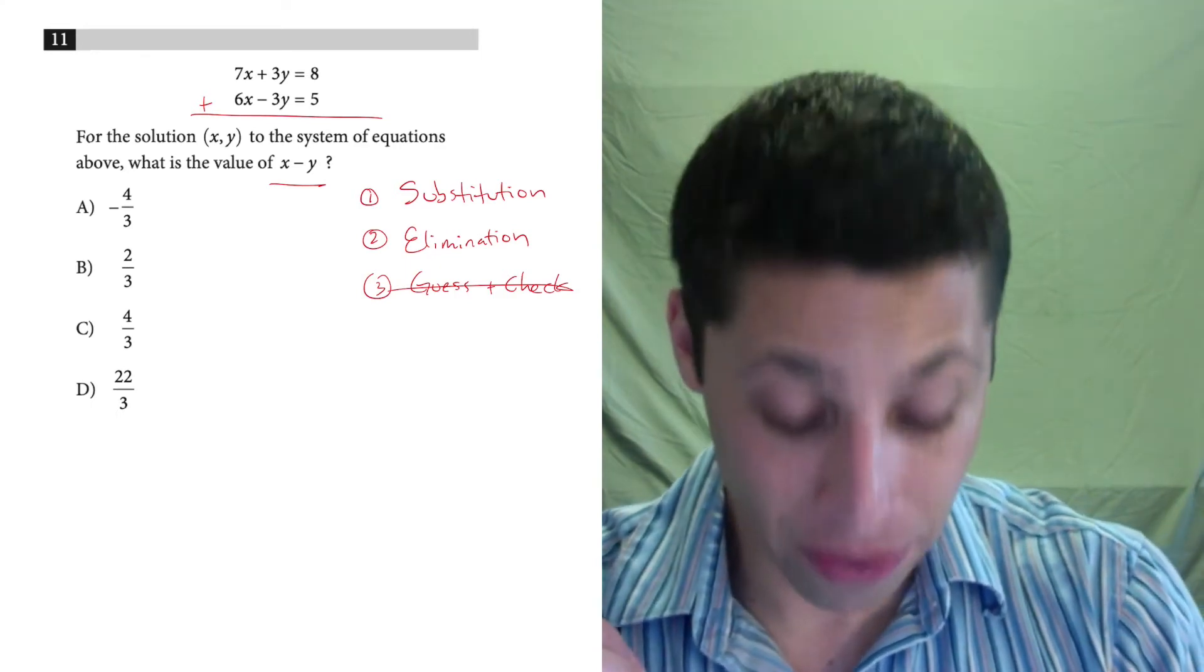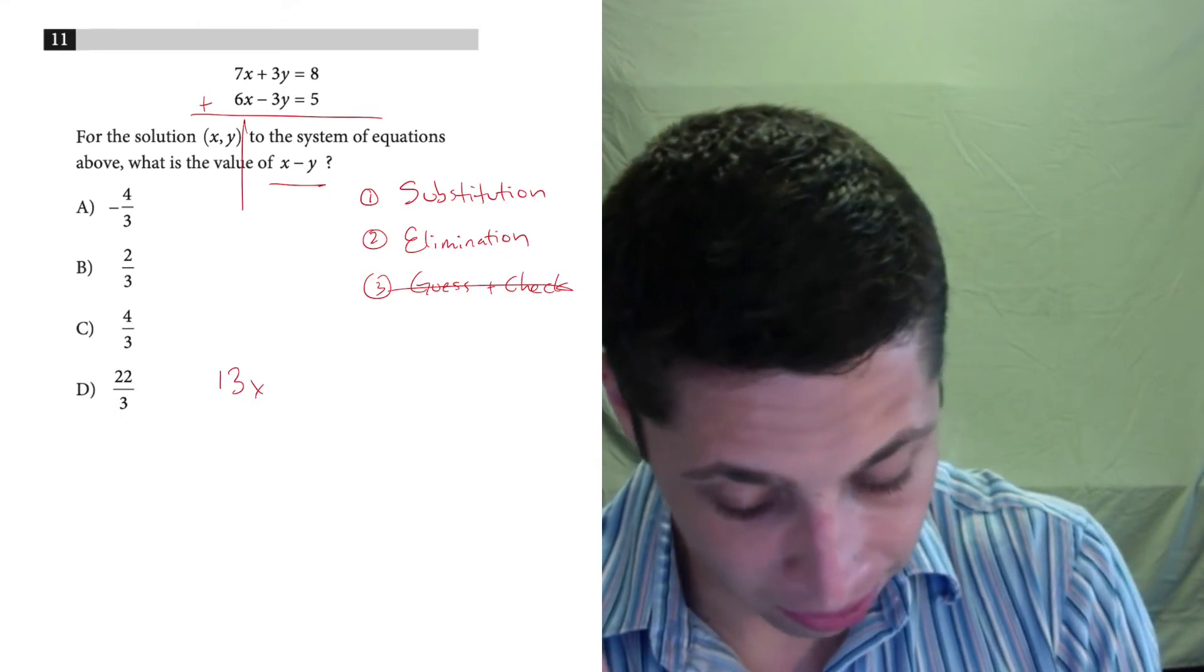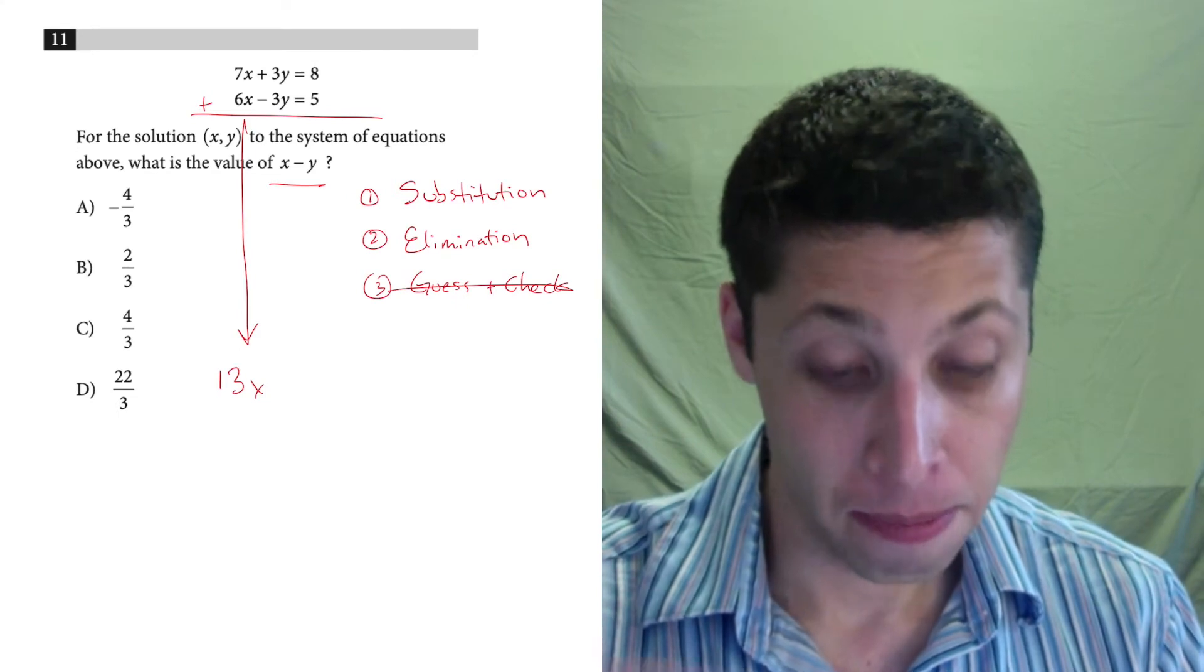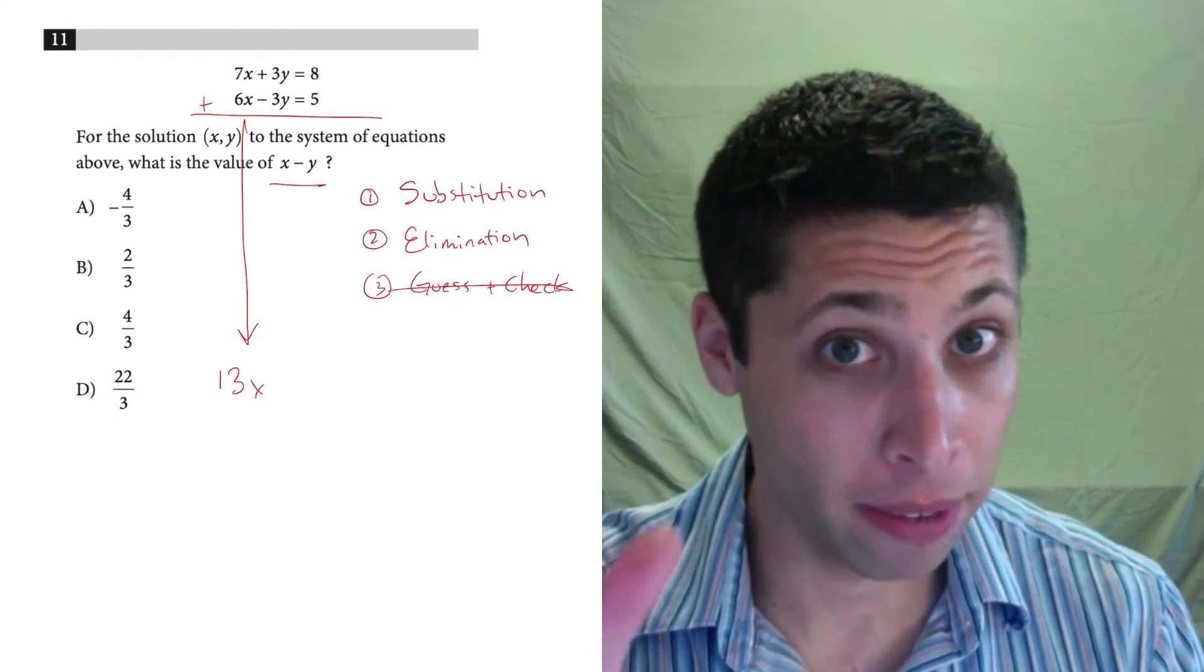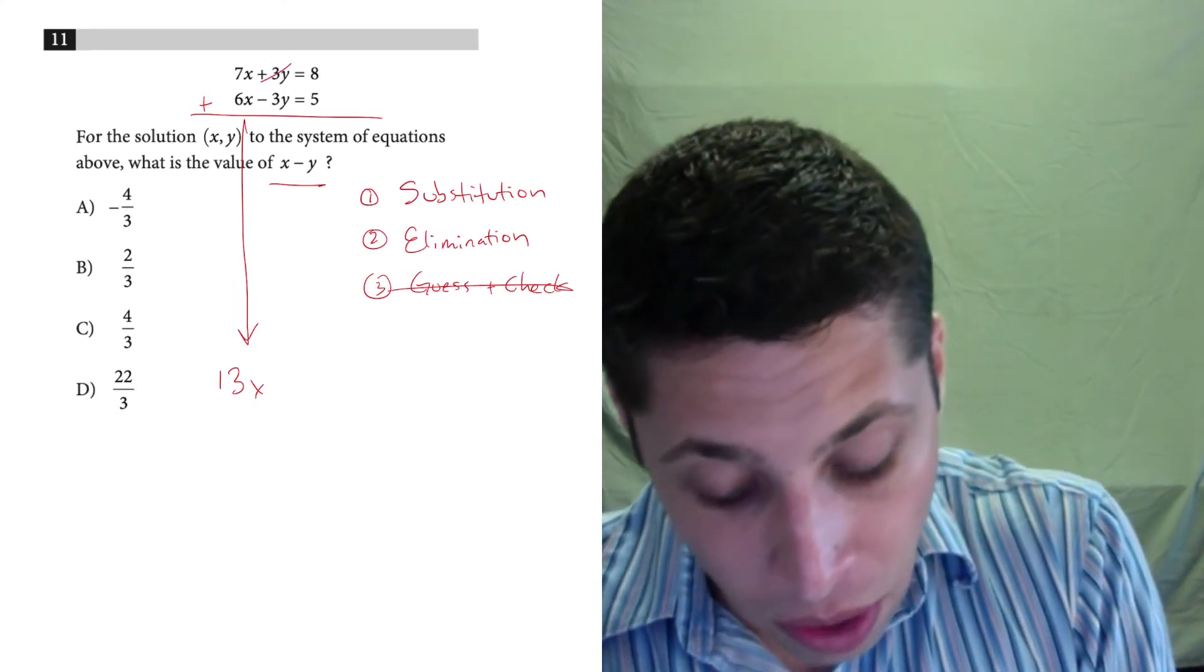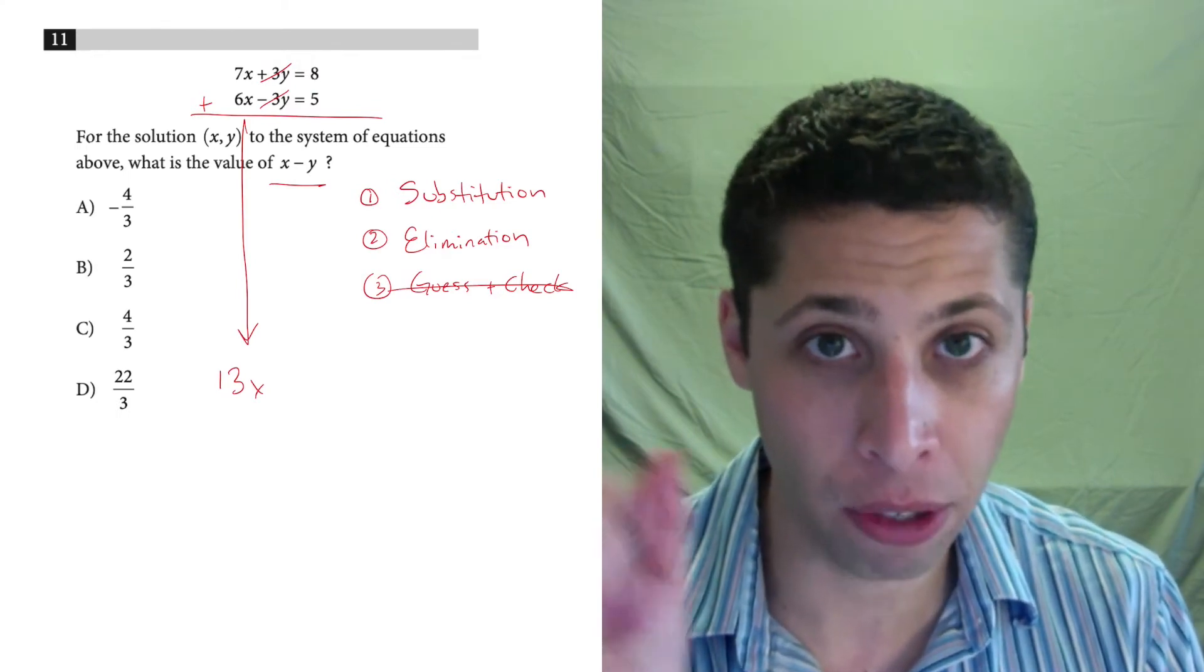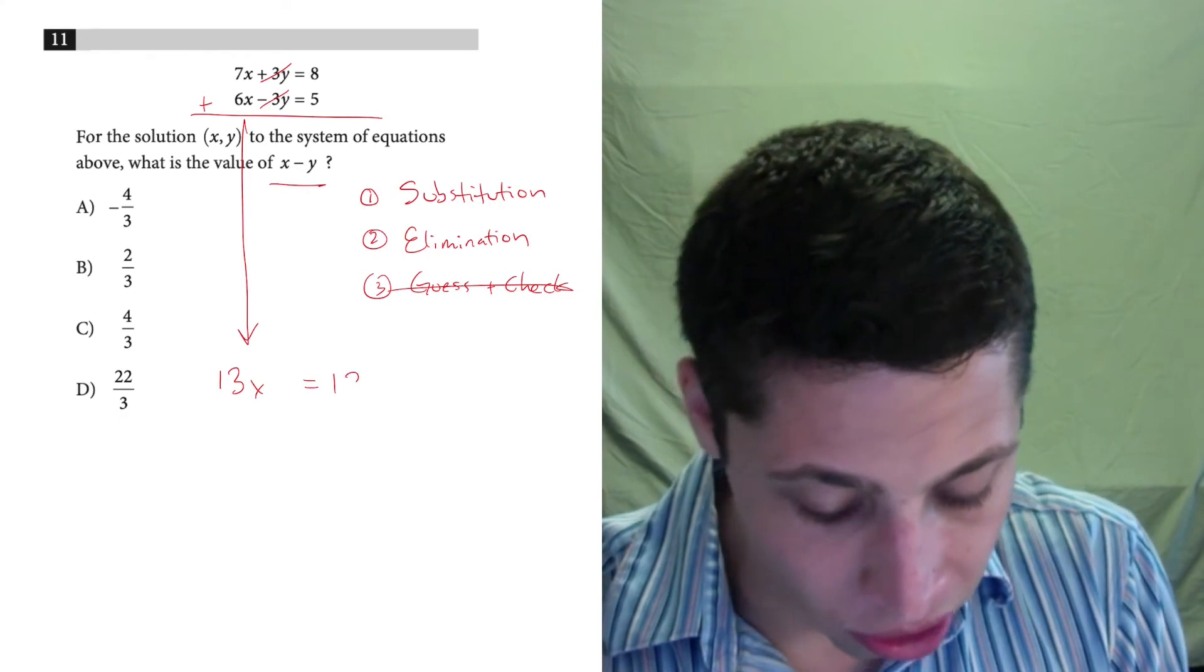We're going to add 7x plus 6x. That's going to get us 13x. I'm going to go all the way down here. 3y minus 3y, or 3y plus negative 3y, either way you want to think about it, is zero y's. So this is canceling out for us, which lets us go from having two variables to one. And then we do 8 and 5, which is 13.